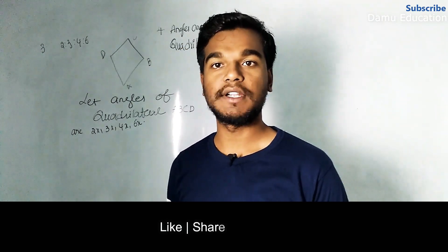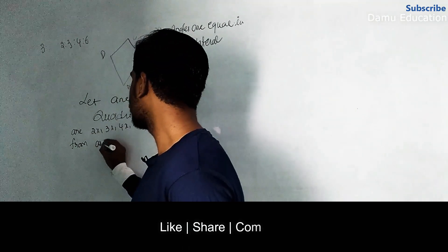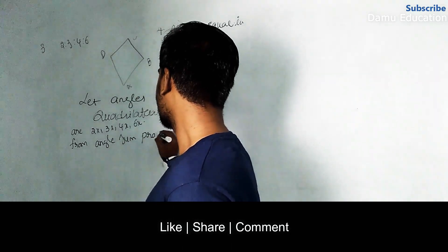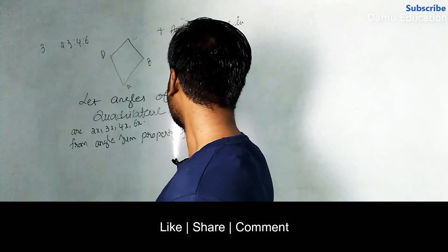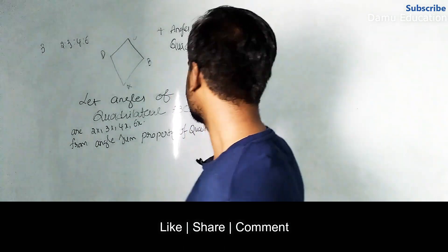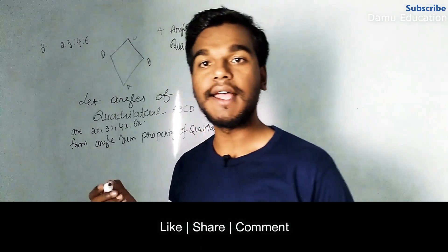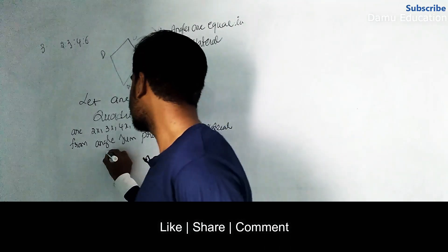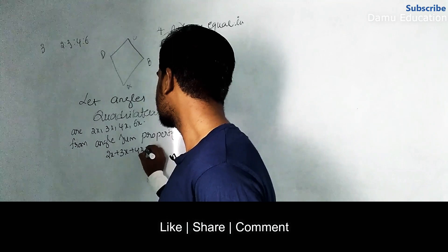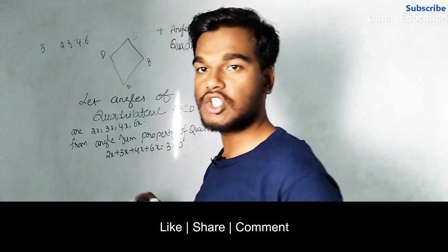To find the angles, we are going to use the angle sum property of a quadrilateral. From the angle sum property of a quadrilateral, the sum of all the angles will be 360 degrees.